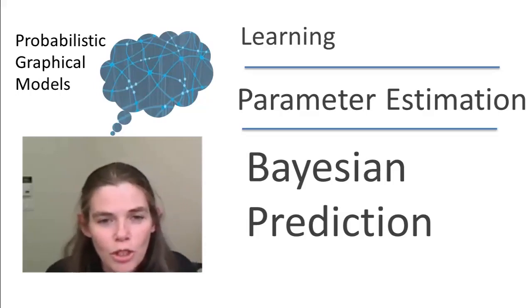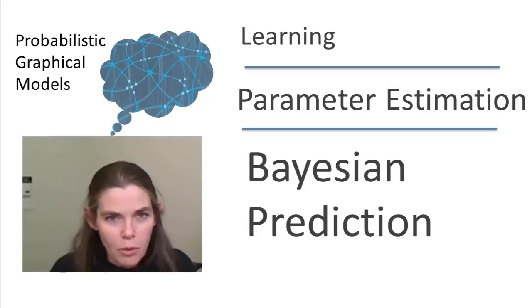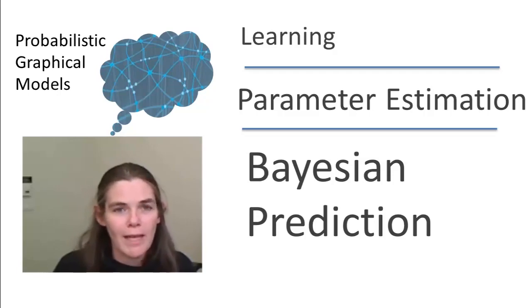We previously defined the notion of Bayesian estimation, in which we have a prior over the parameters and we continue to maintain a posterior over the parameters as we accumulate new data.